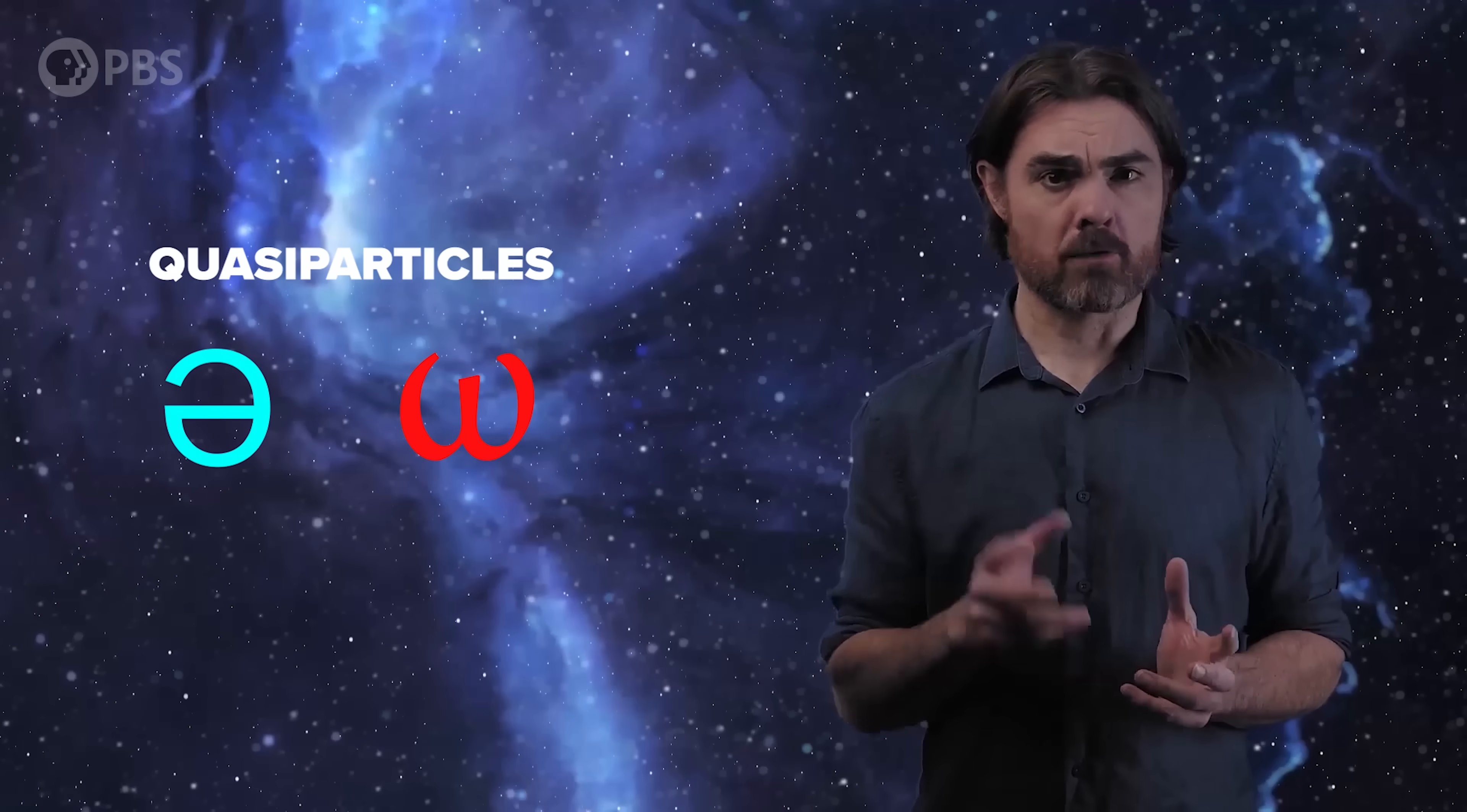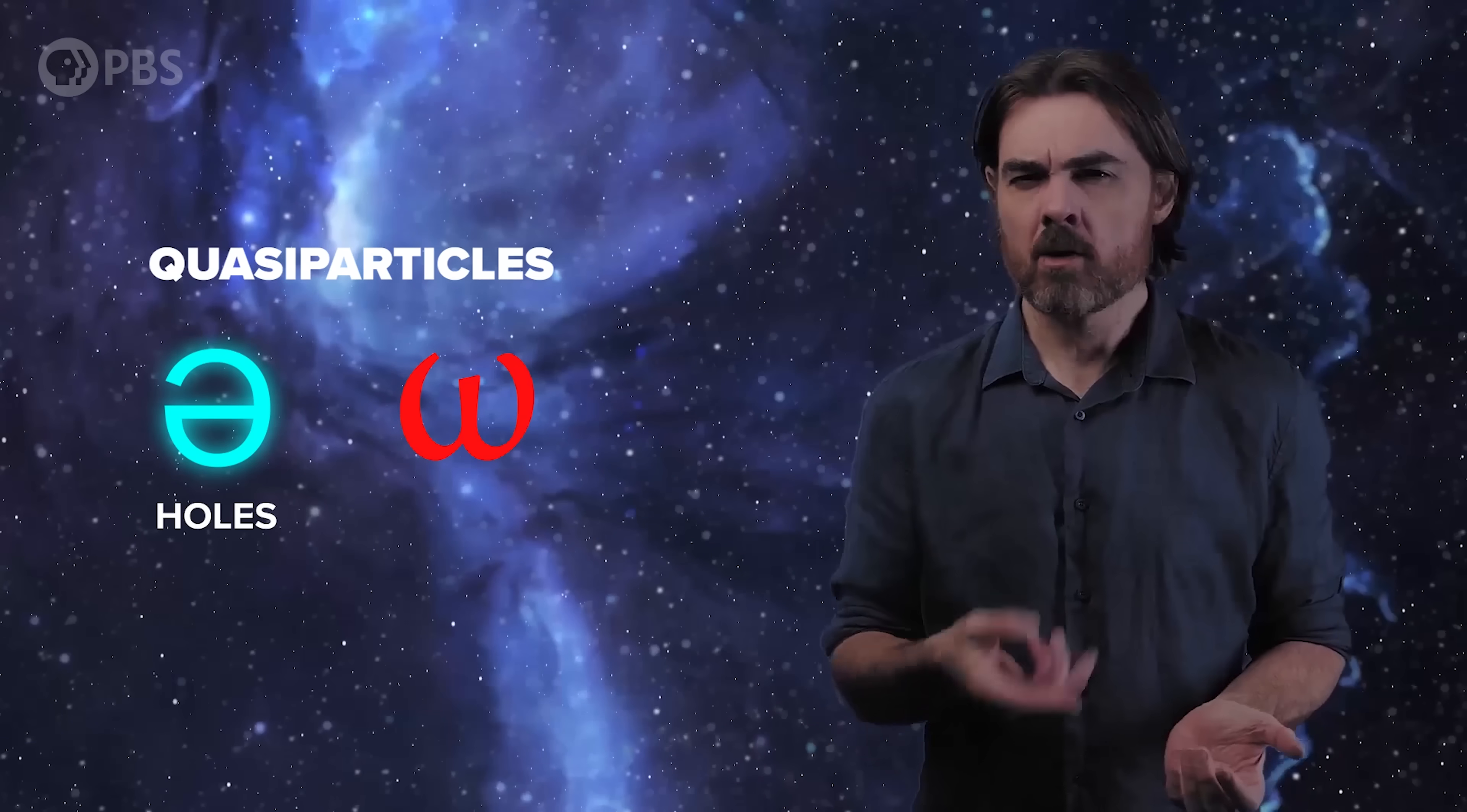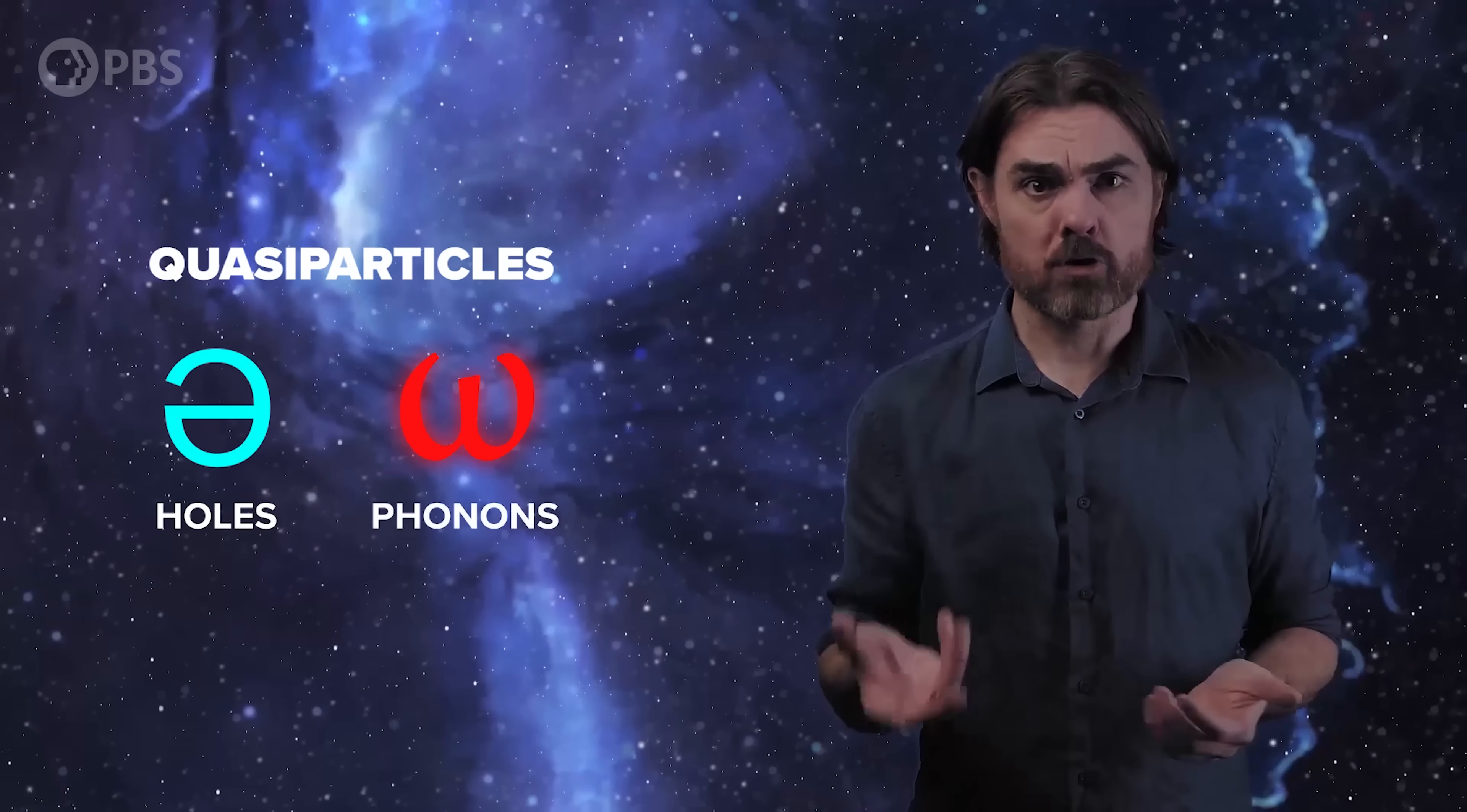But before we get to that, a quick recap. We now have two types of quasiparticle. Holes, which are like quasi-electrons, or perhaps quasi-positrons. And we have phonons, which are analogous to photons.